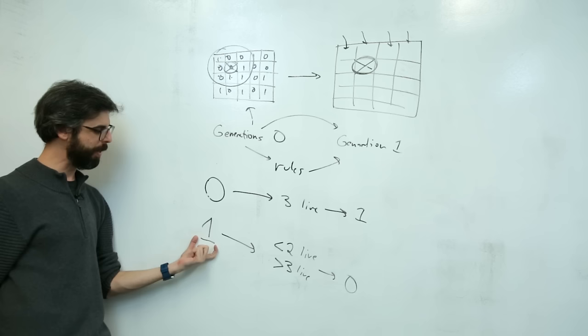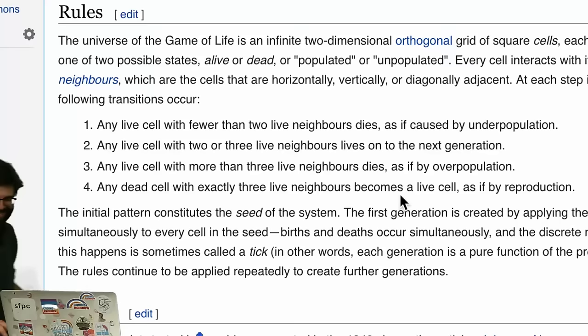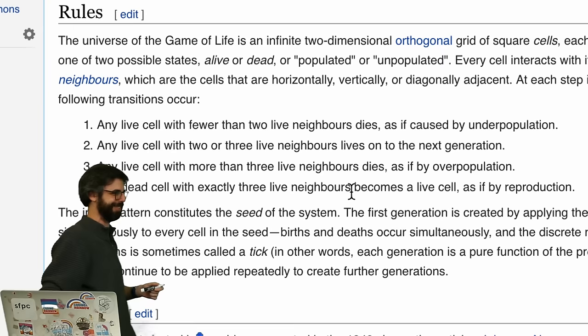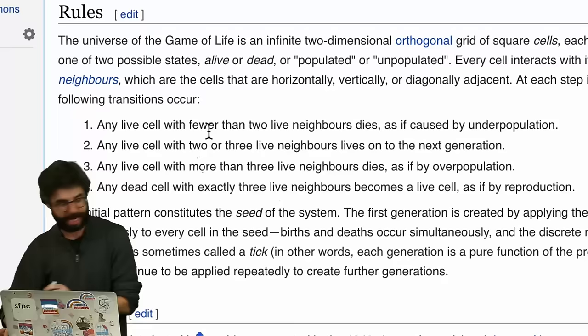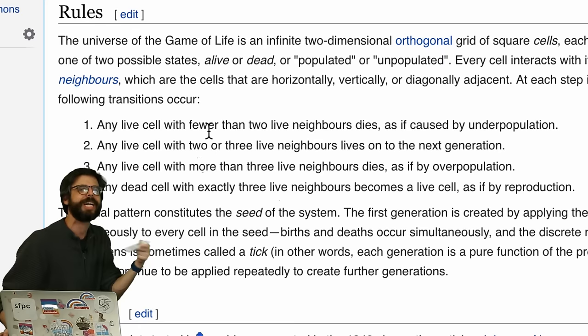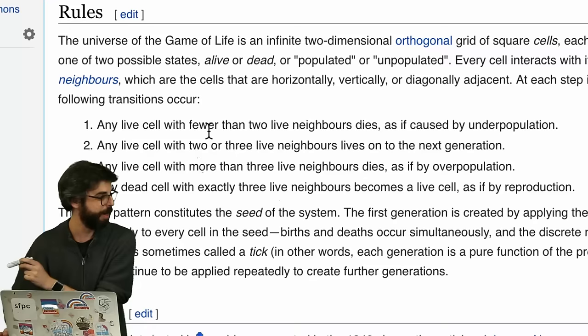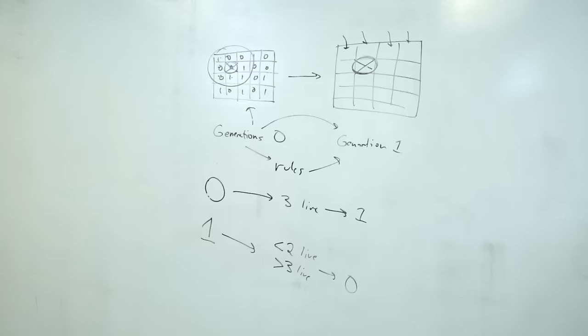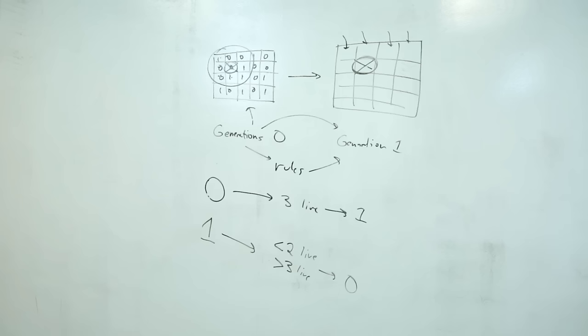I'm not sure I got those numbers right, so let me go check the Wikipedia page again. Live cell with fewer than two live neighbors dies — yes, less than two dies. Live cell with two or three neighbors lives — I can kind of ignore that rule since the state stays the same. Live cell with more than three neighbors dies. And any dead cell with exactly three live neighbors becomes alive. I've got those rules correct. So what do I need? All I need to make this program work is a data structure to store the grid.